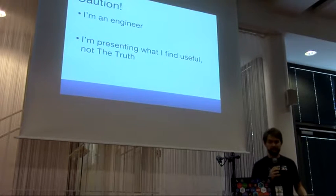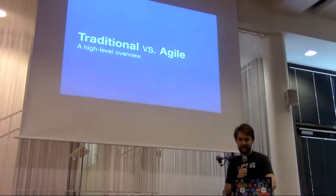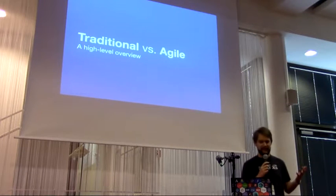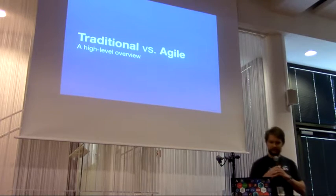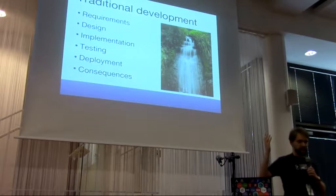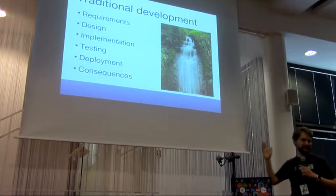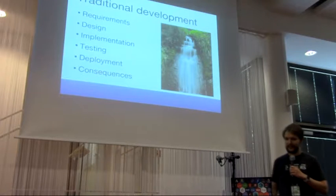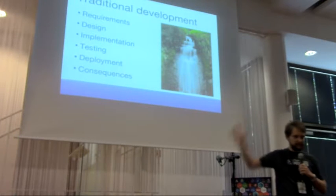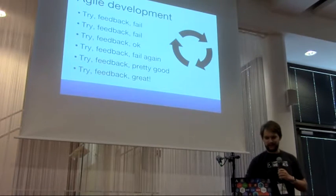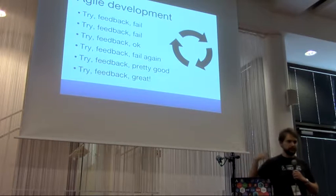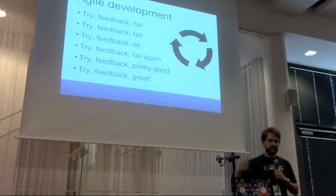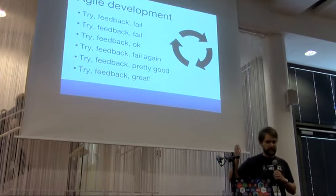So what is agile? It's mostly compared to a traditional approach. The traditional approach is basically software development where you have some requirements, you do the design, implementation, testing, and deployment, and you do it in one go and then it's done. Agile is basically about doing iterations — you try, get feedback, fail, try again, and iterate to the right place.